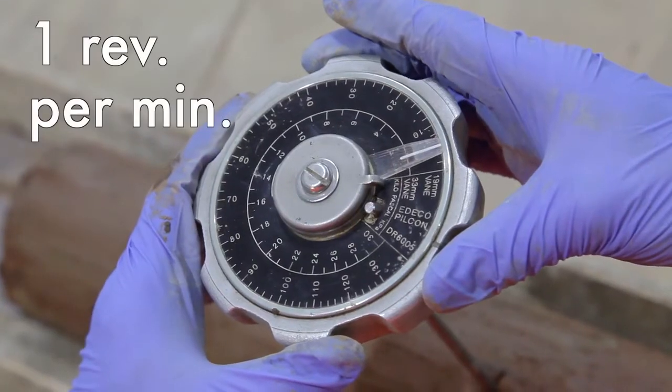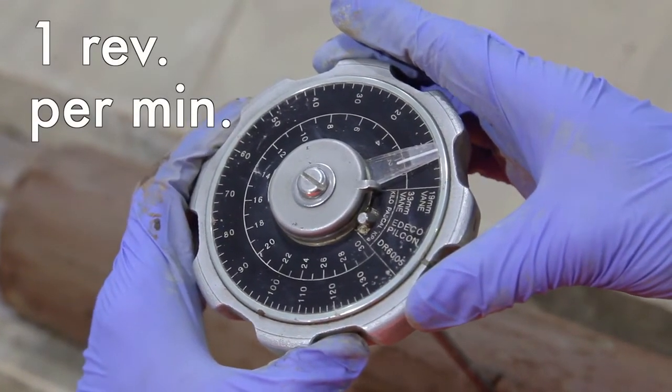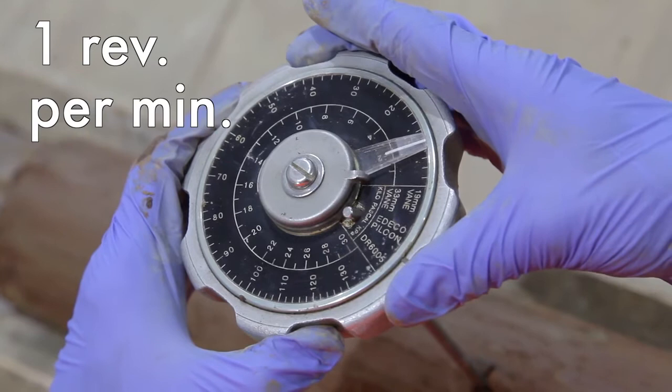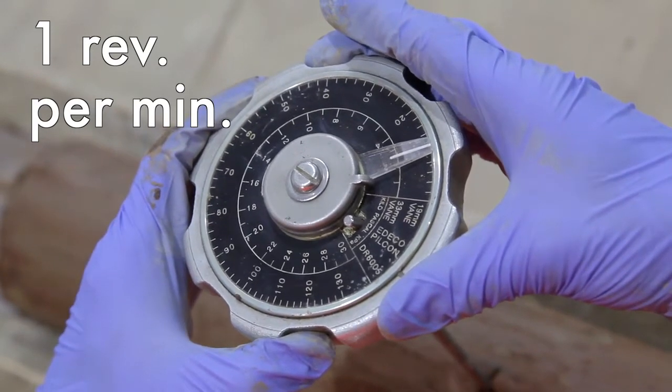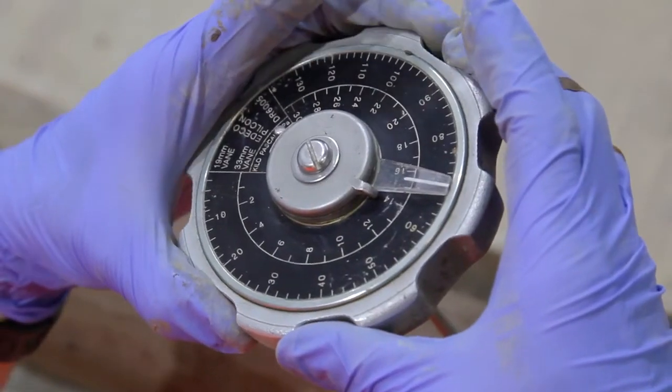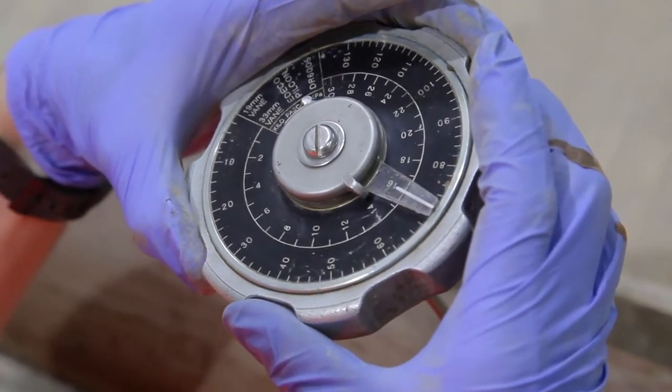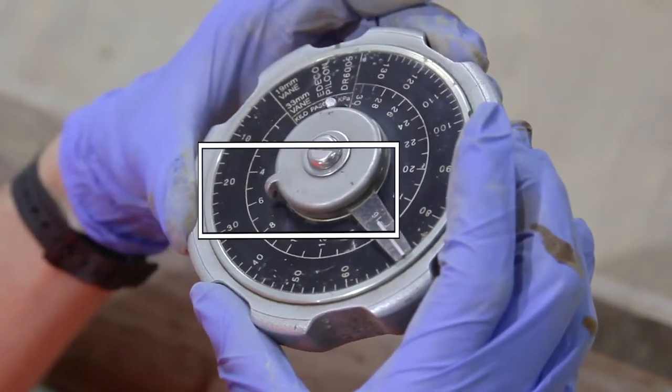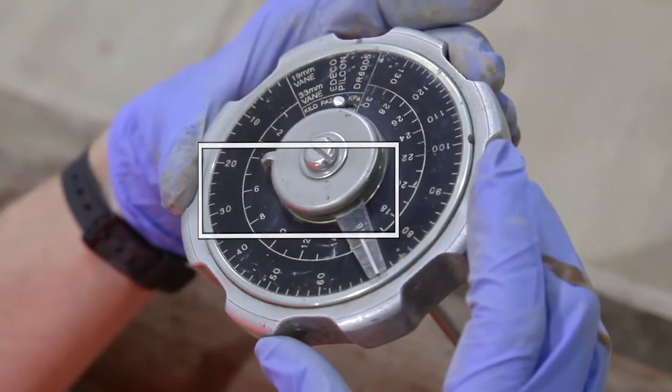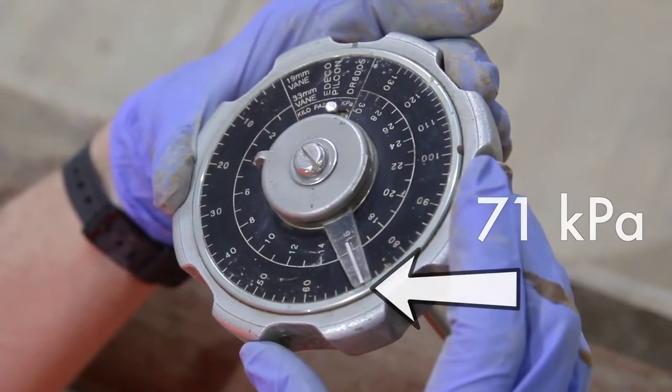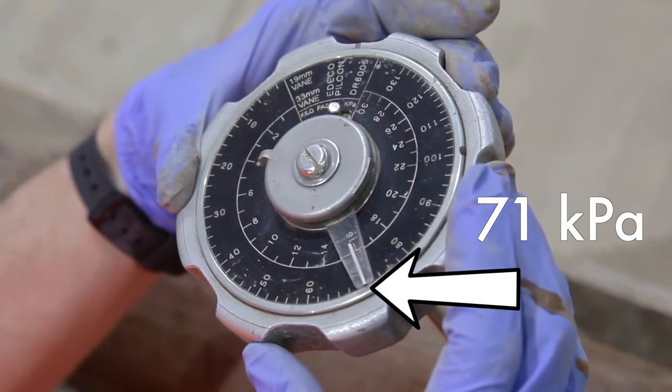Turn the dial clockwise at a speed of one revolution per minute. You could follow the second hand on a watch. Rotate as slowly as possible whilst maintaining a stable movement until shear occurs. The pointer will stop moving. Record the peak shear strength in kilopascals kPa to the nearest single digit.